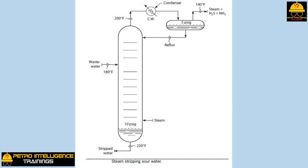Second, a portion of the stripping steam is used to break the chemical bond between the water and the H2S and NH3 in the wastewater. When these gases first dissolved in the water, heat was evolved or released — this is called the heat of solution. When these same gases are driven out of the wastewater with the stripping steam, this same heat of solution has to be supplied again. This heat comes from condensing the stripping steam in the water flowing across the trays in the tower.